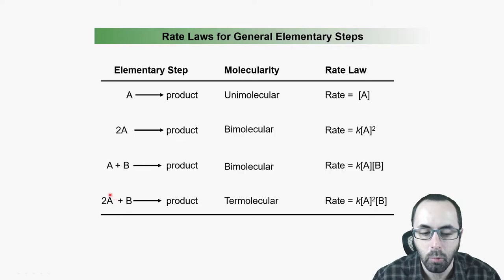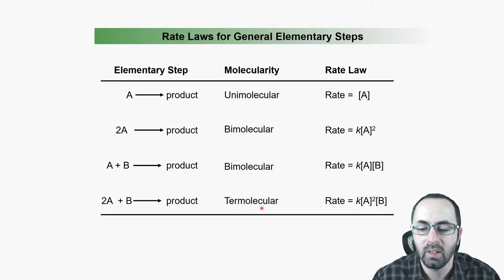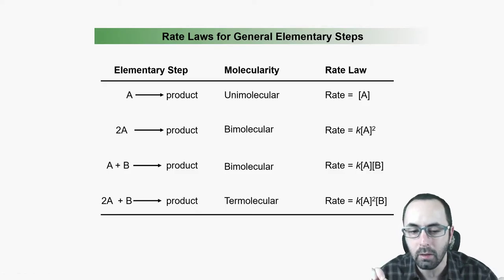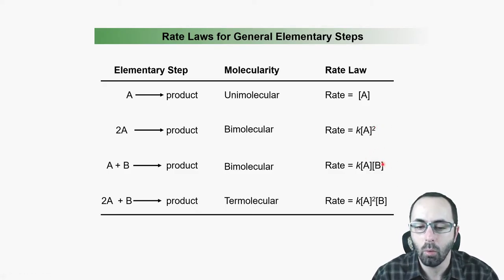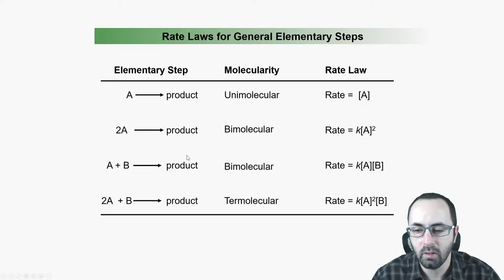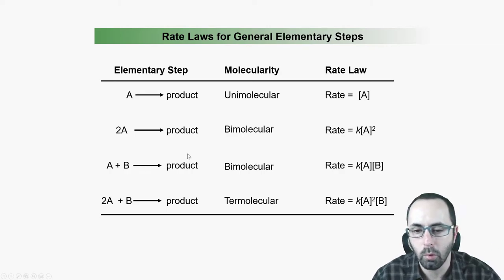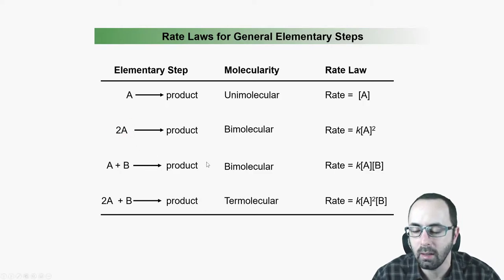If we have two molecules of A reacting with one molecule of B, this is referred to as a termolecular reaction, and its rate would be the rate constant times [A] squared times [B] to the first power. It's only because these are considered elementary steps that we can infer these orders from the coefficients in the balanced equation. It doesn't apply to normal reactions — we're assuming this is the only thing happening in that step.